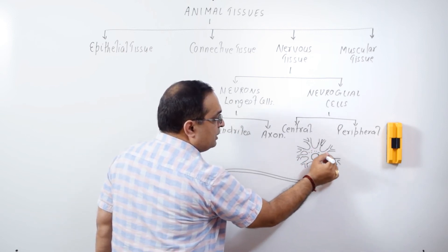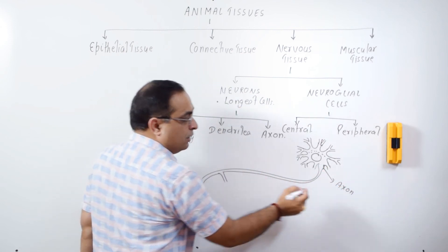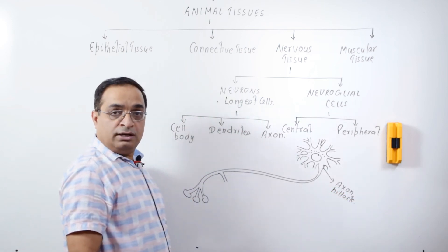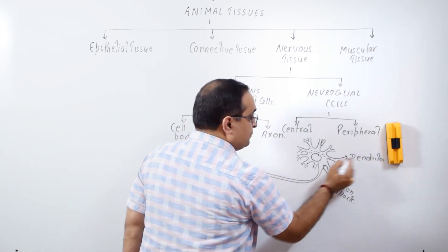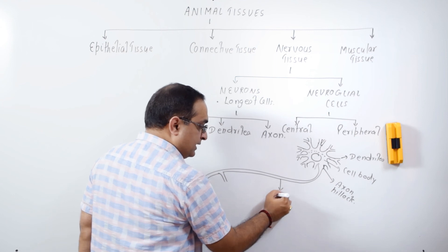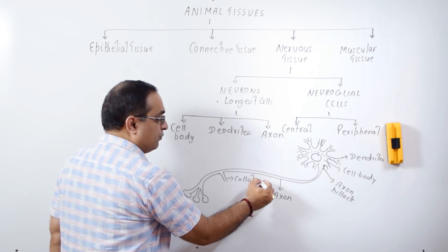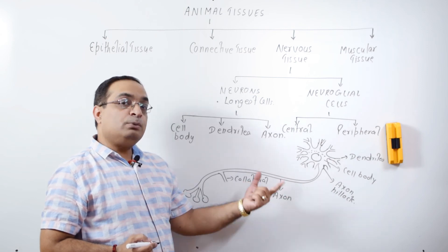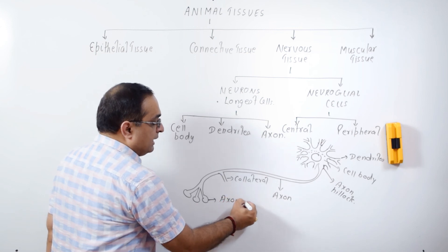These are the Nissel's granules. This region from where the axon emerges out is the most sensitive part of neuron and it is called axon hillock. So, these extensions are what? These are dendrites. This is the main cell body of the neuron. This long extension is axon. This lateral branch is collateral. The plasma membrane of the axon is called axolemma and the cytoplasm is axoplasm. These are the axon end bulbs.